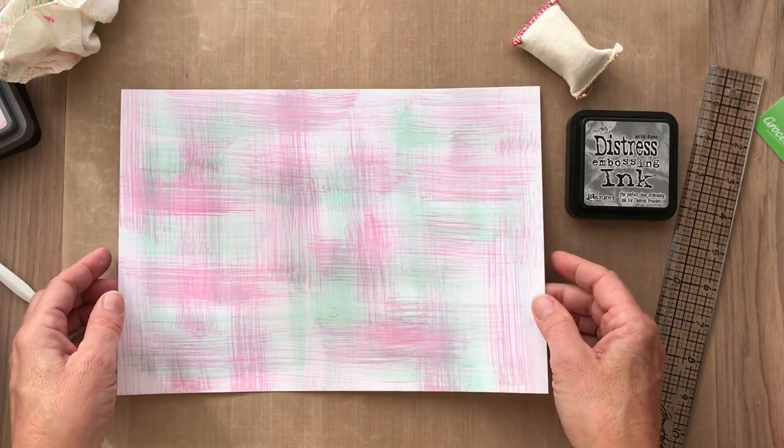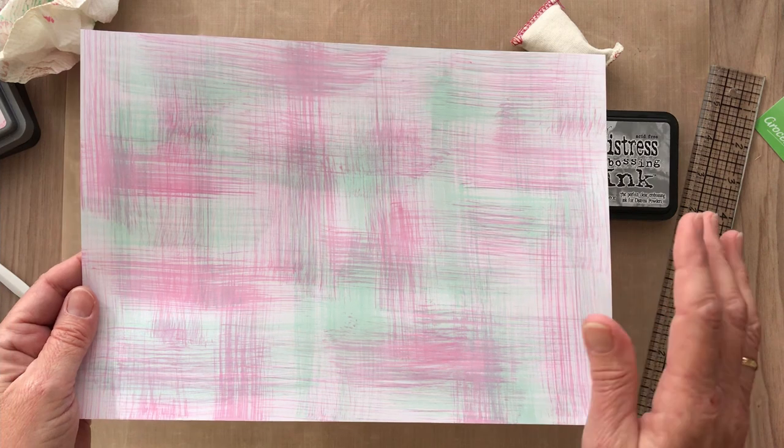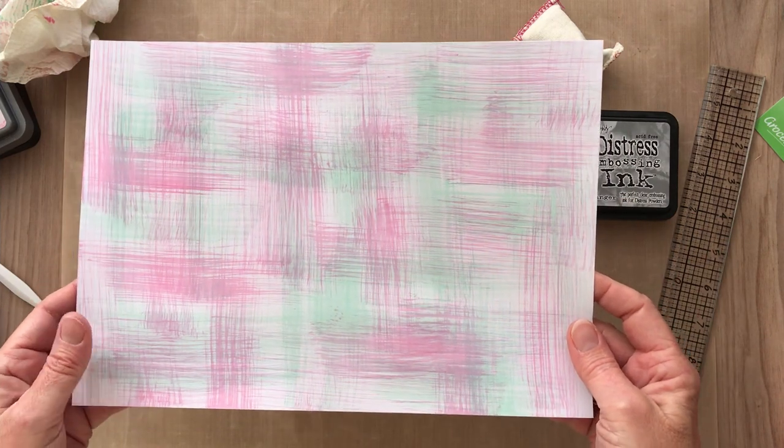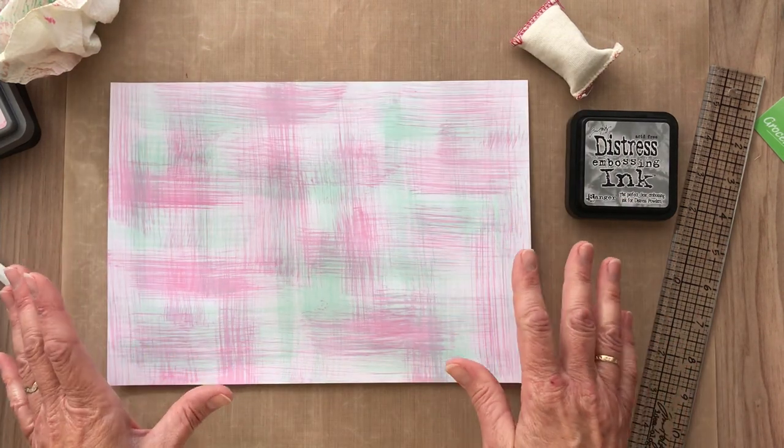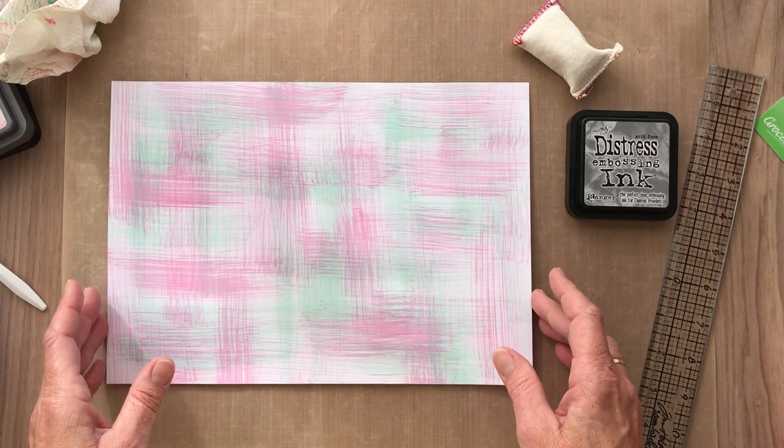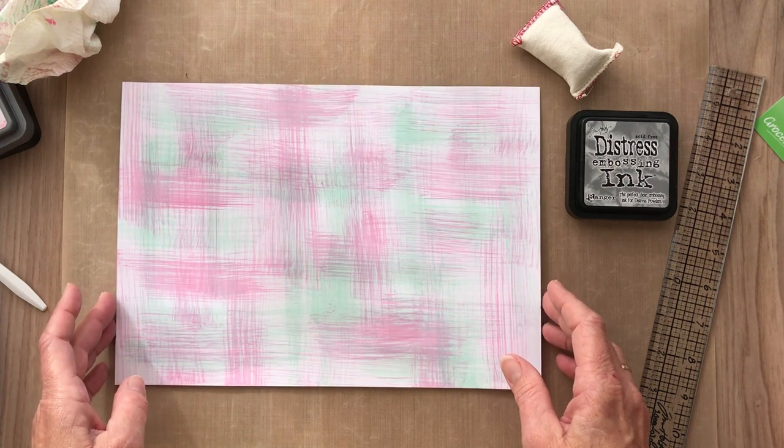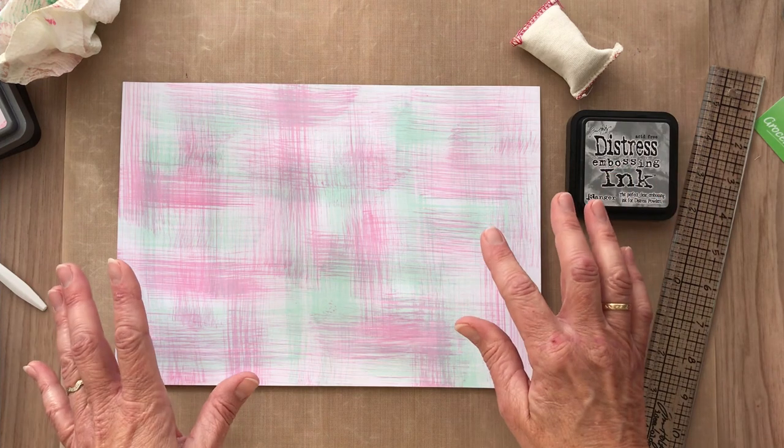I've dried that off and as you can see, you can use this as is. This can be the final step if you'd like and it looks nice just as it is. I'm just going to add a little bit more to it and I'm going to add some embossing.